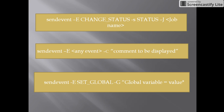Next command: send_event -e change_status -s status -j job_name. This command manually changes the status of the job to anything — for example, it might be success. It will change the status of the job.